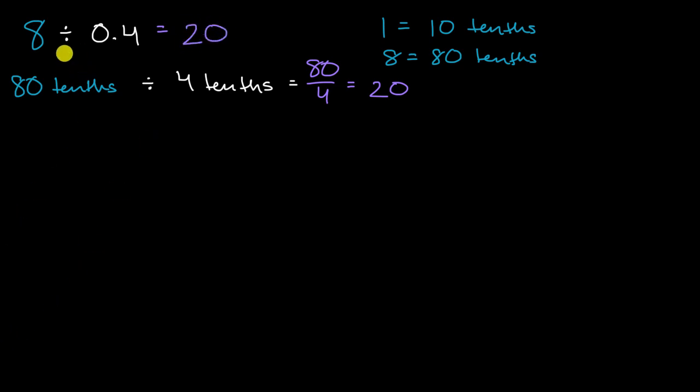Another way that you could think about that is to rewrite eight divided by four tenths as eight over four tenths, over four tenths. And then if you wanted to rewrite this, you could say, hey, can I multiply the numerator and the denominator by some quantity that'll get rid of the decimal in the denominator?